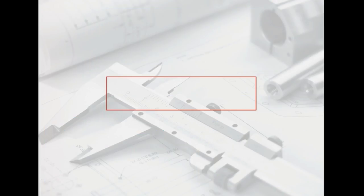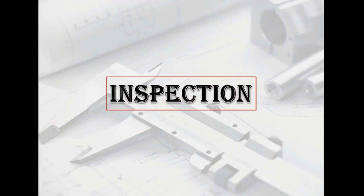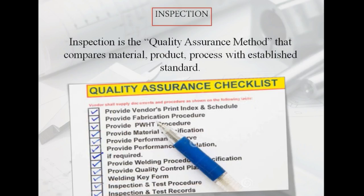Our next topic is Inspection. In a simple way, Inspection is the comparison between the actual product and established standard. Established standard is nothing but your manufacturer's drawing. Here you can see that the Quality Assurance Checklist - vendors shall supply the document as per the checklist requirement.